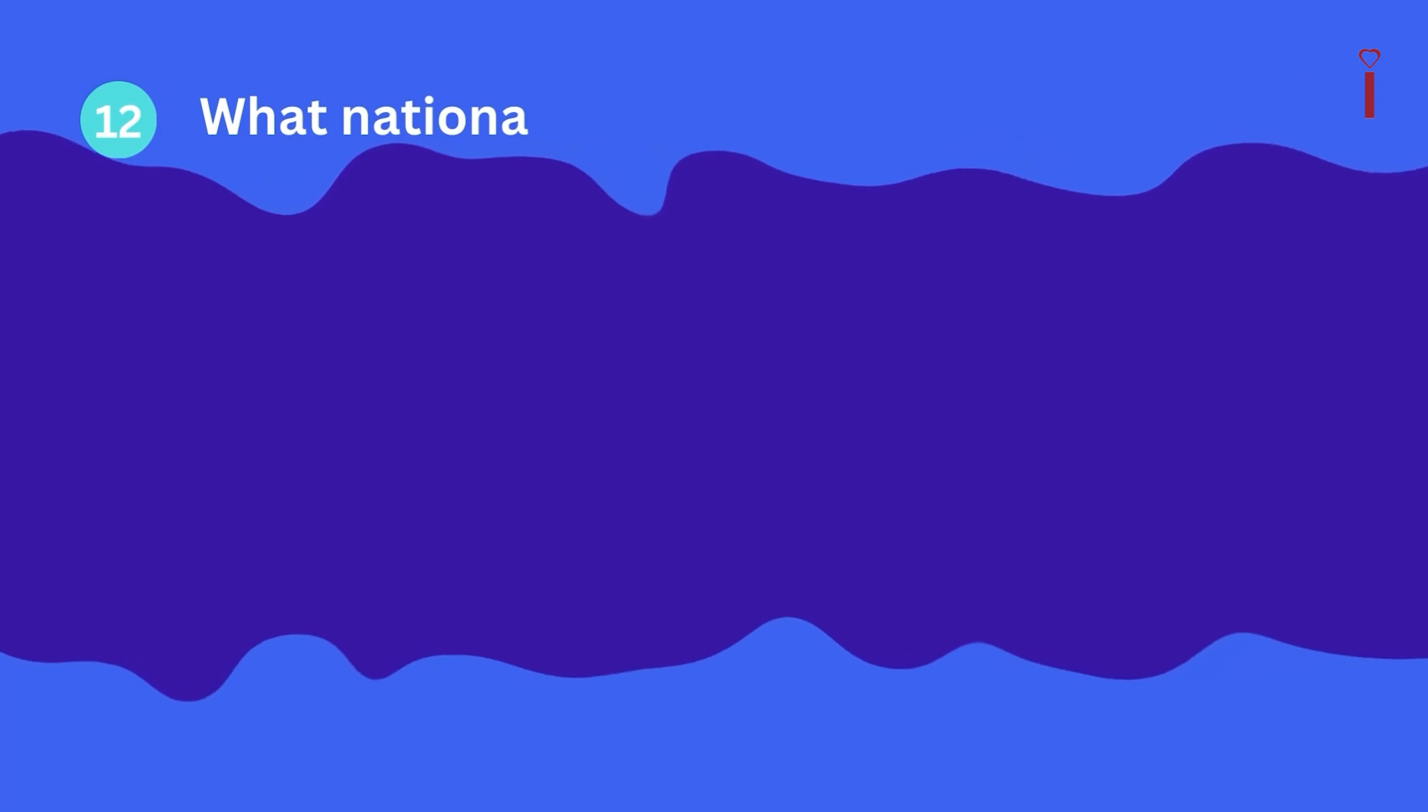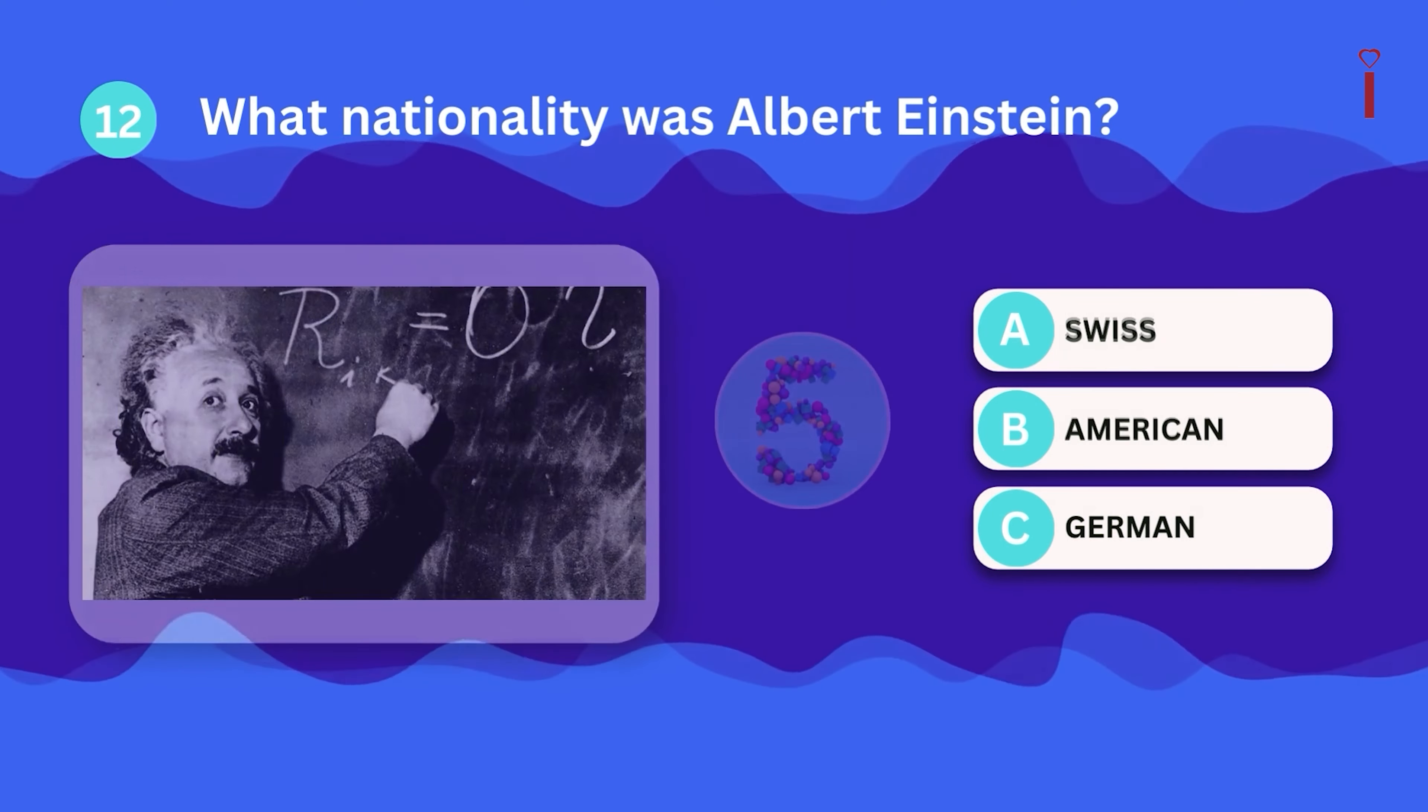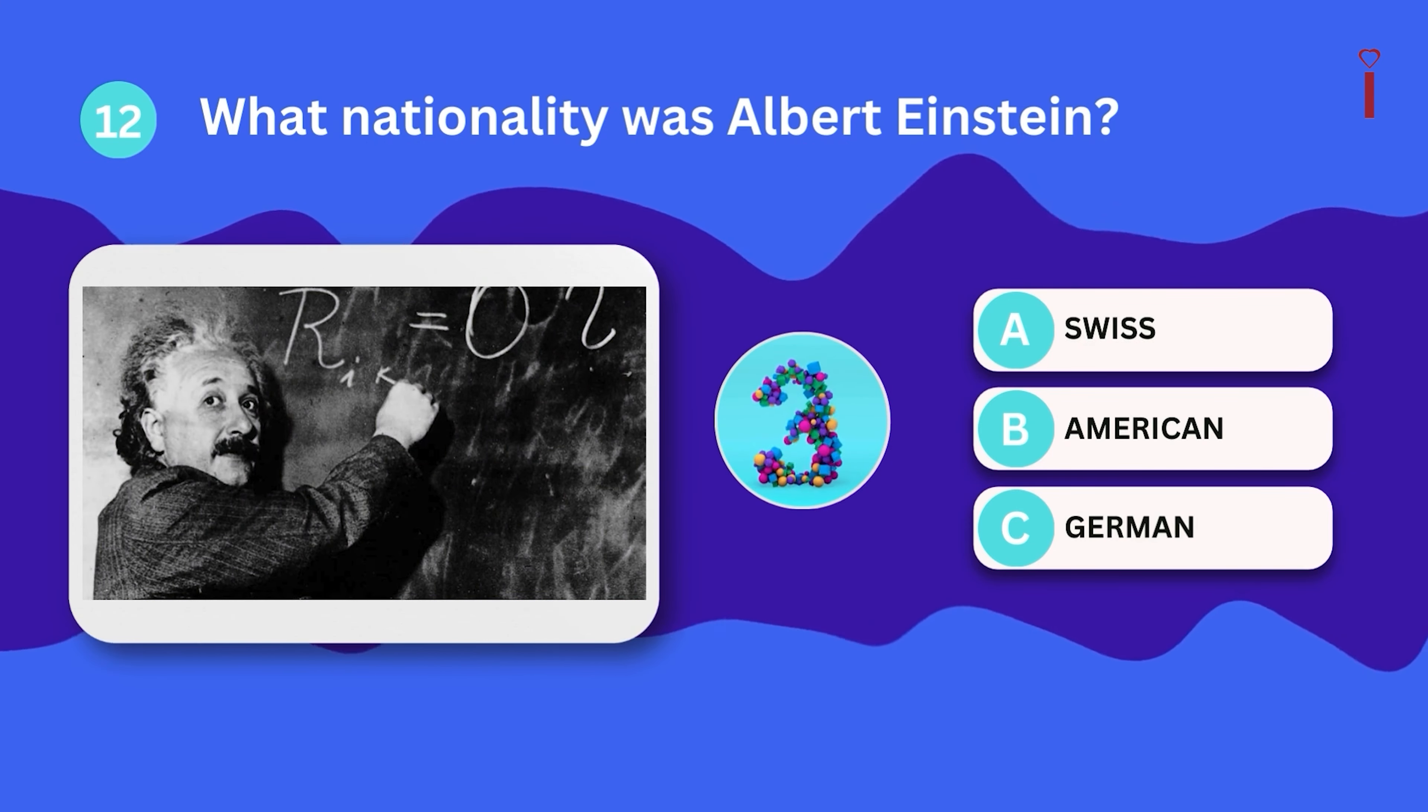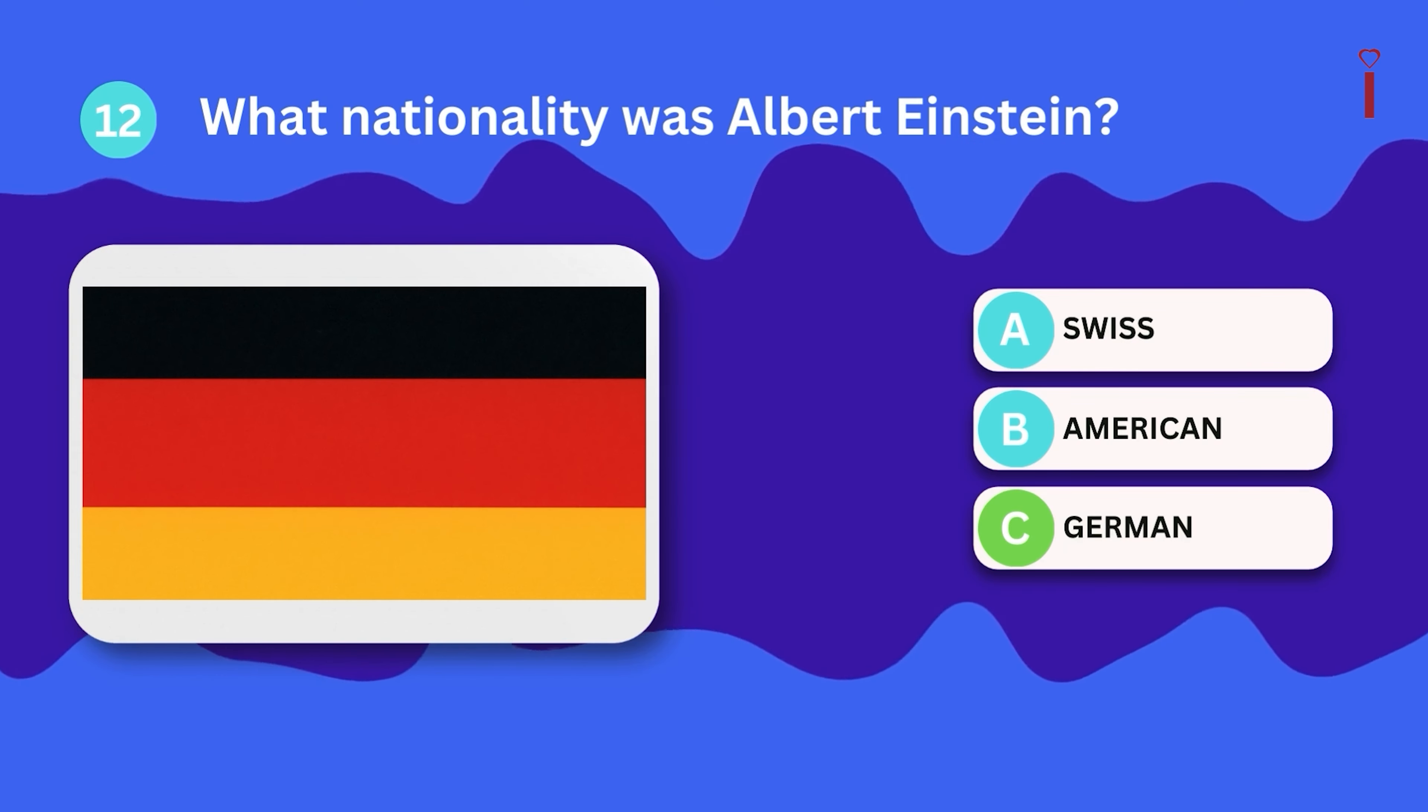Question number twelve. What nationality was Albert Einstein? Swiss, American, or German? He was German.